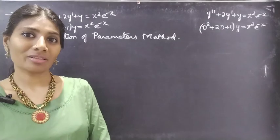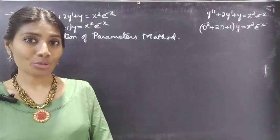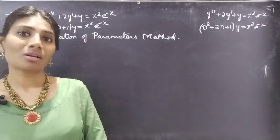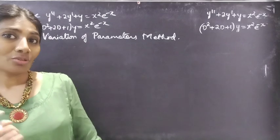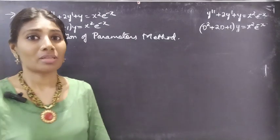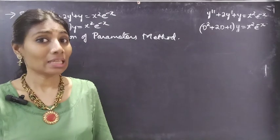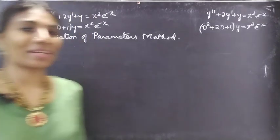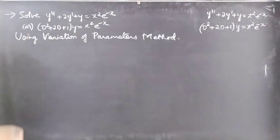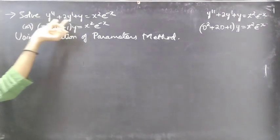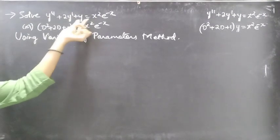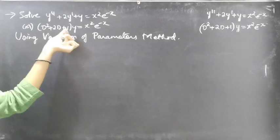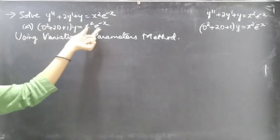Hello everyone, this is Zia Kalpana. In this video we are going to solve a differential equation using the variation of parameters method, part 2. The problem is: solve y'' + 2y' + y = x² e^(-x), or in operator form: (D² + 2D + 1)y = x² e^(-x).